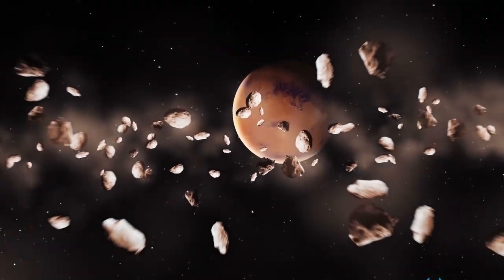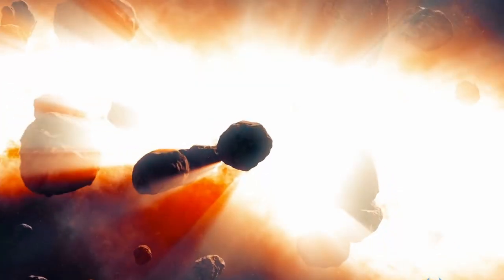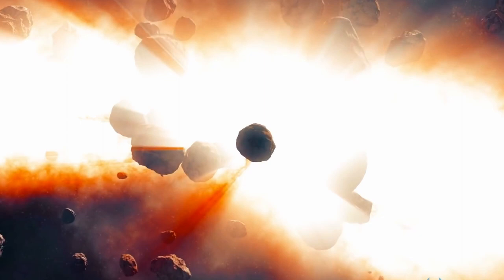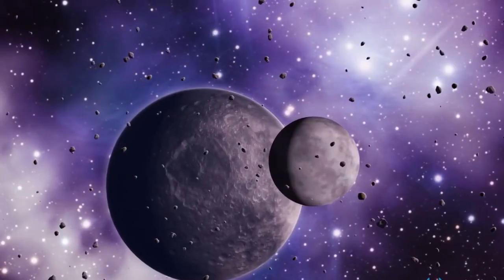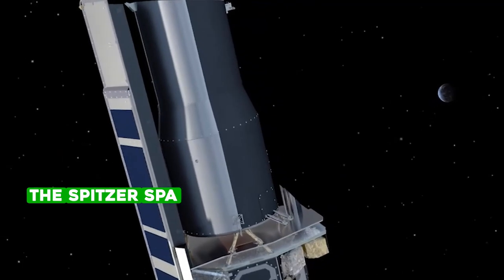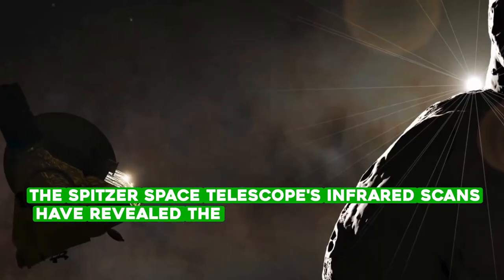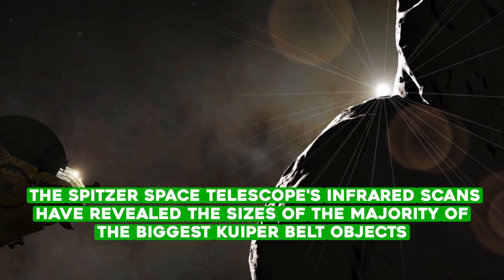Because Kuiper Belt objects are so far apart, measuring their size is challenging. A Kuiper Belt object's projected diameter is determined by assumptions about how reflective the object's surface is. The Spitzer Space Telescope's infrared scans have revealed the size of the majority of the largest Kuiper Belt objects.